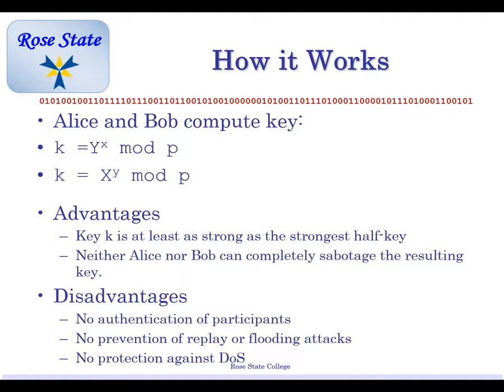When doing your assignment, you need to calculate both half keys. Because I've been known to put something in there where they don't match. I have had people in the past just do one of them. So do both. Neither Alice nor Bob can compute or completely sabotage the resulting key. And neither one knows the other's key. Well, they know what the key is. They just don't know how they got it.